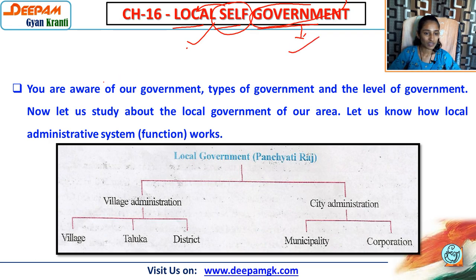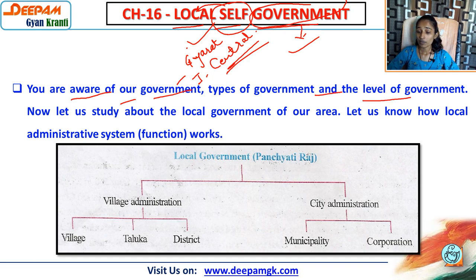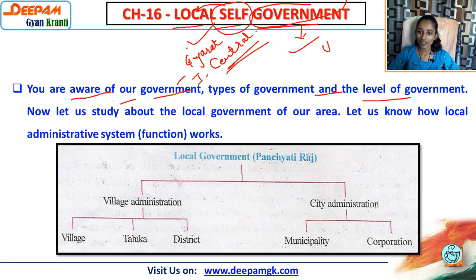With the members, one committee is organised - that is called government. We are aware of our government. If we are living in Gujarat, we have the Gujarat government. We are living in India, so we have the central government. Basically two types of government are there: union or central government, and state government. Now let us study about the local government of our area.